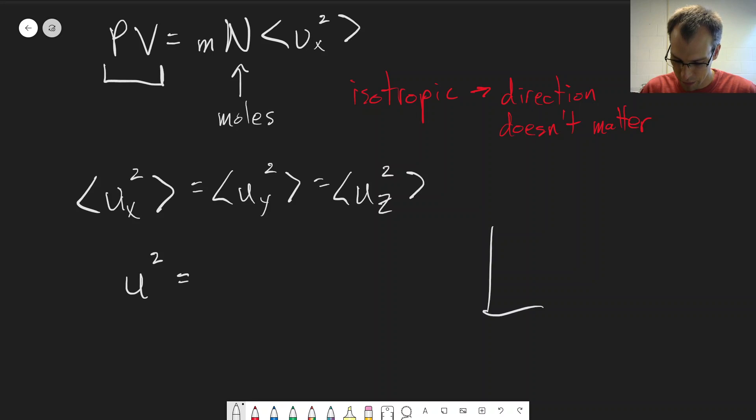So if we think about our x, y, z coordinates here, our velocity vector is going to point in some direction. The speed is going to be the length of this vector. So that's u, and then we'll have our different components: ux, uy, and uz. So the square of the speed is going to be equal to the square of the x component plus the square of the y component plus the square of the z component. This is basically the Pythagorean theorem, just with an extra dimension.